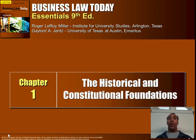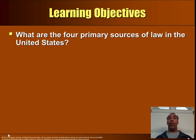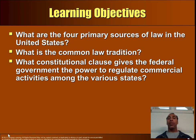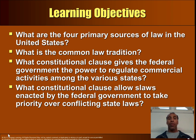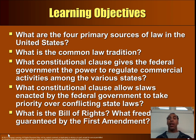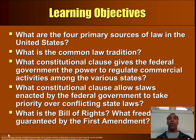The first chapter is the basis of law and the historical and constitutional foundations. Our learning objectives for the chapter are: What are the four primary sources of law in the United States? What is the common law tradition? What constitutional clauses give the federal government the power to regulate commercial activities among states — the Uniform Commercial Code? What constitutional clauses allow federal laws to take priority over conflicting state laws? And what is the Bill of Rights — what freedoms are guaranteed by the first ten amendments?